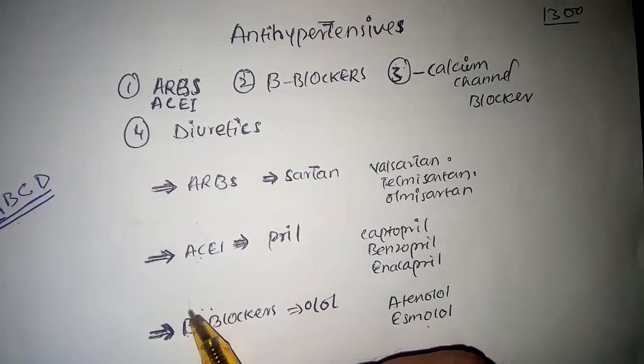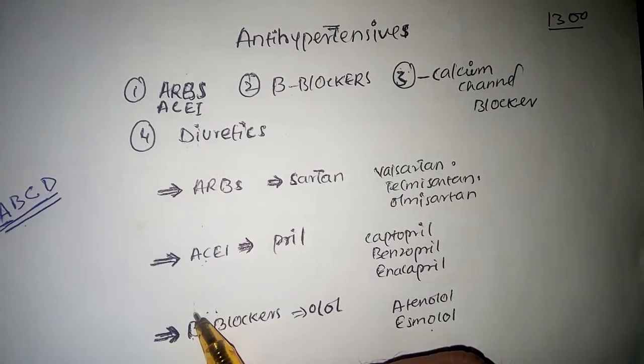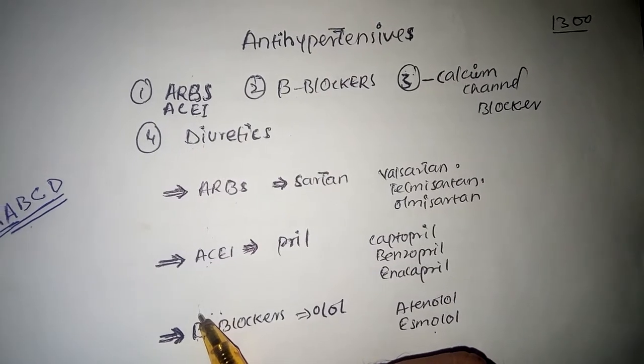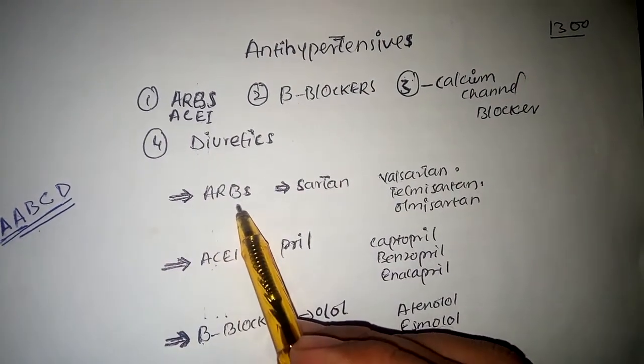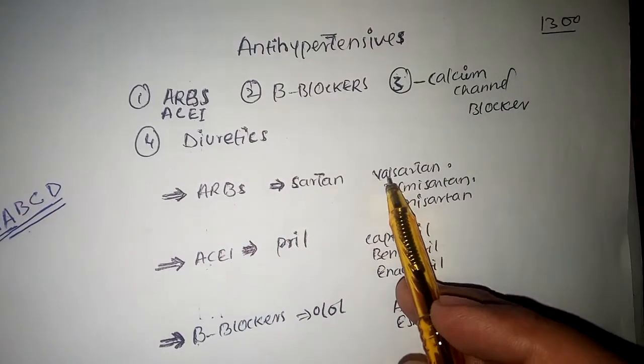You can easily tell which class a drug belongs to and its treatment. If we talk about ARBs, we have drugs like valsartan, telmisartan, olmisartan - these all end with sartan.